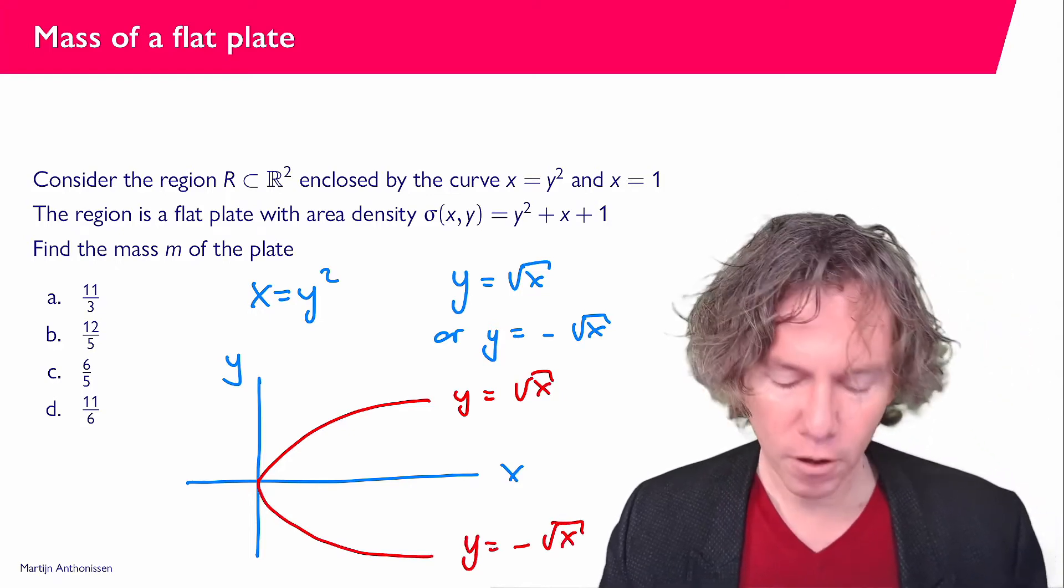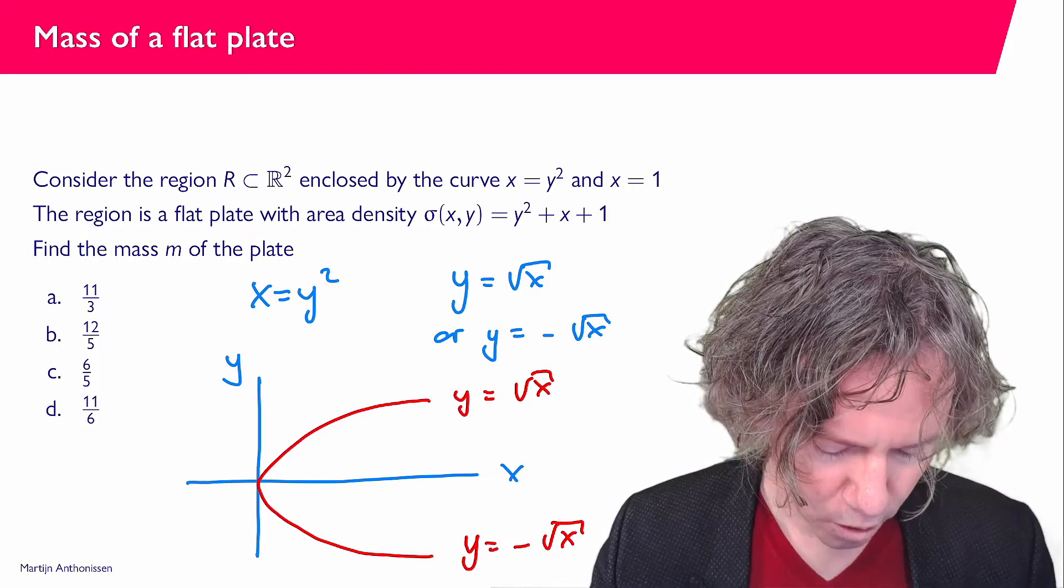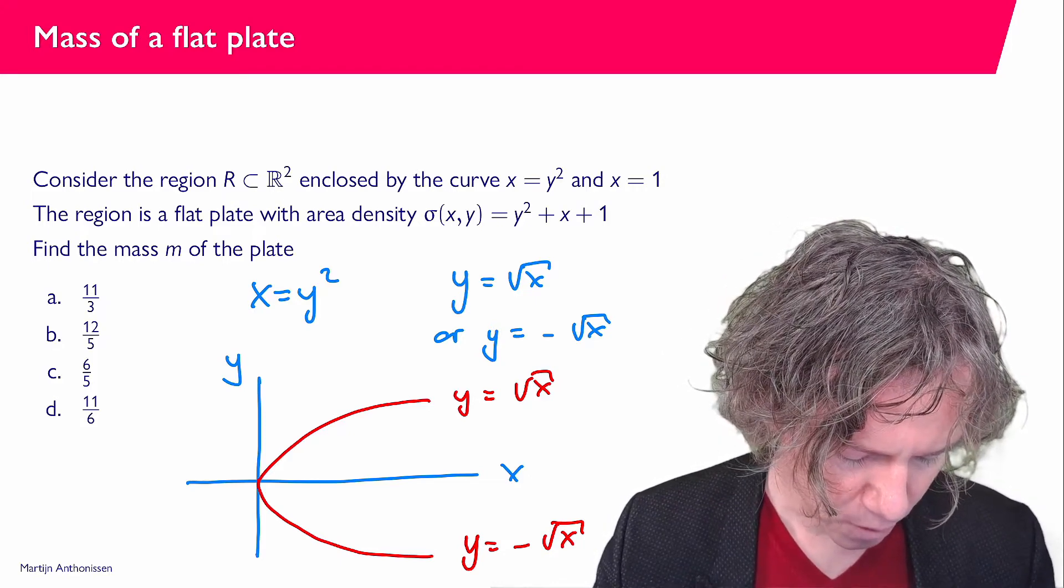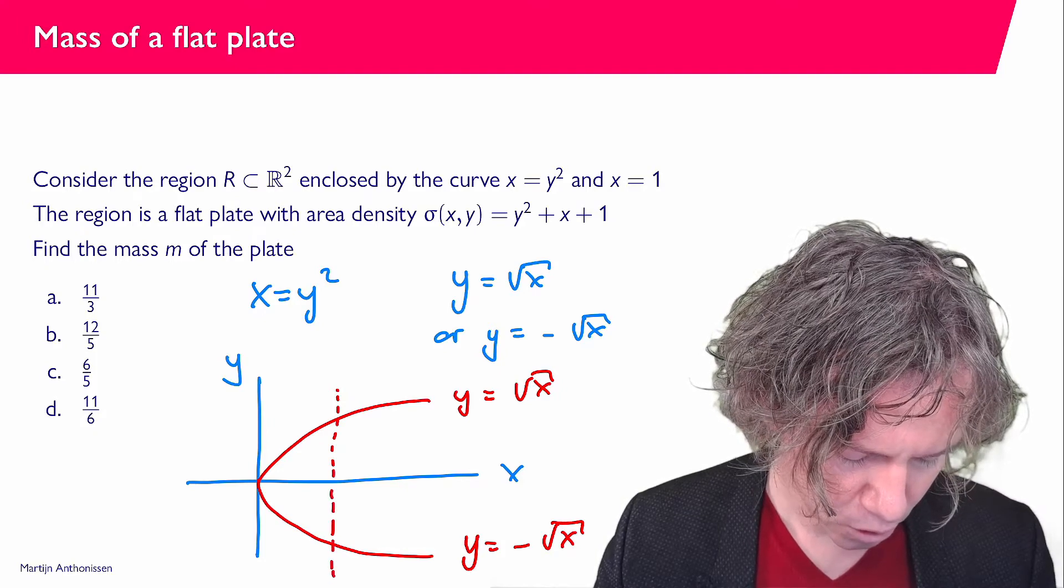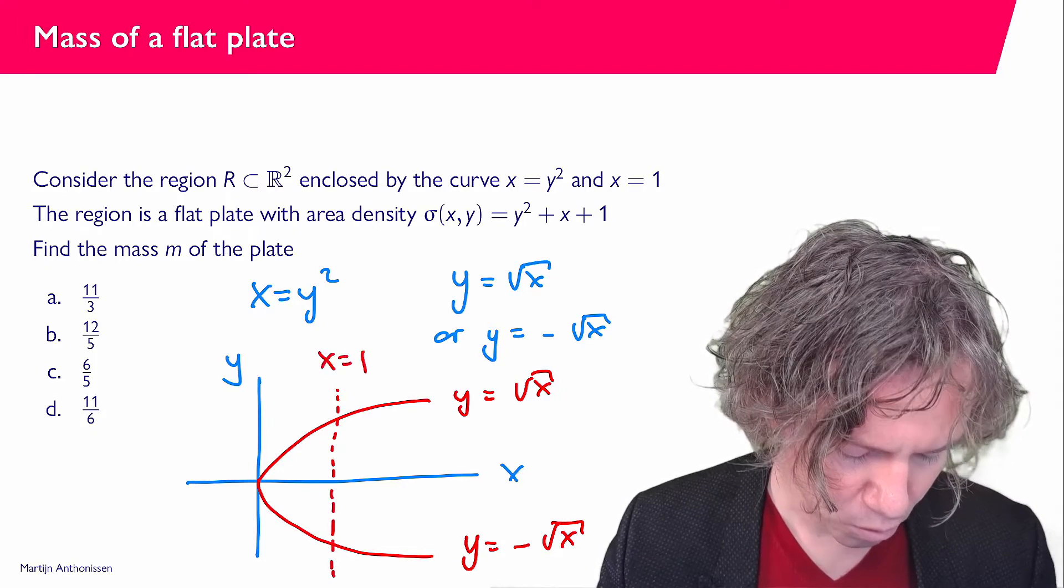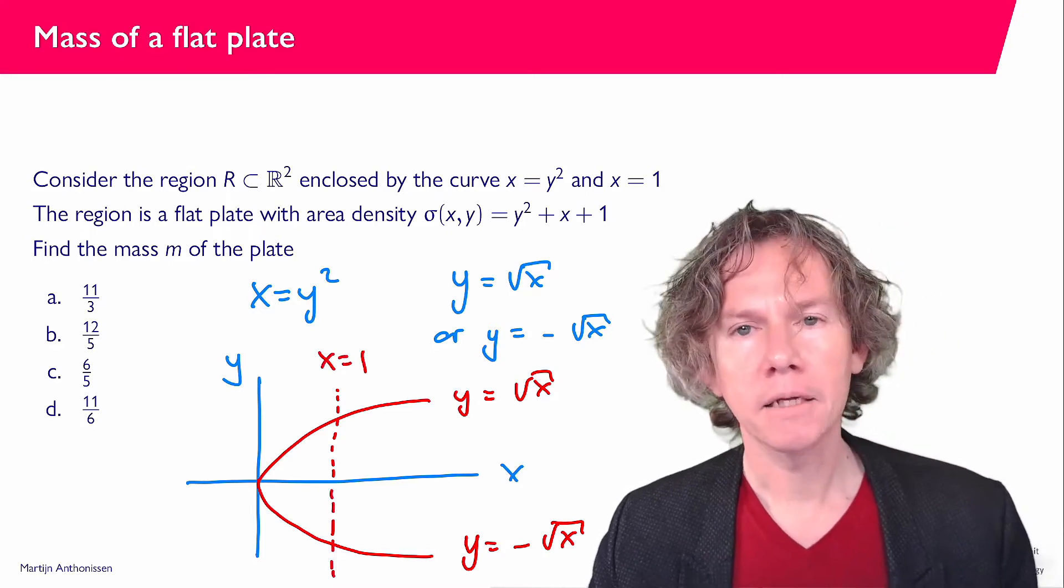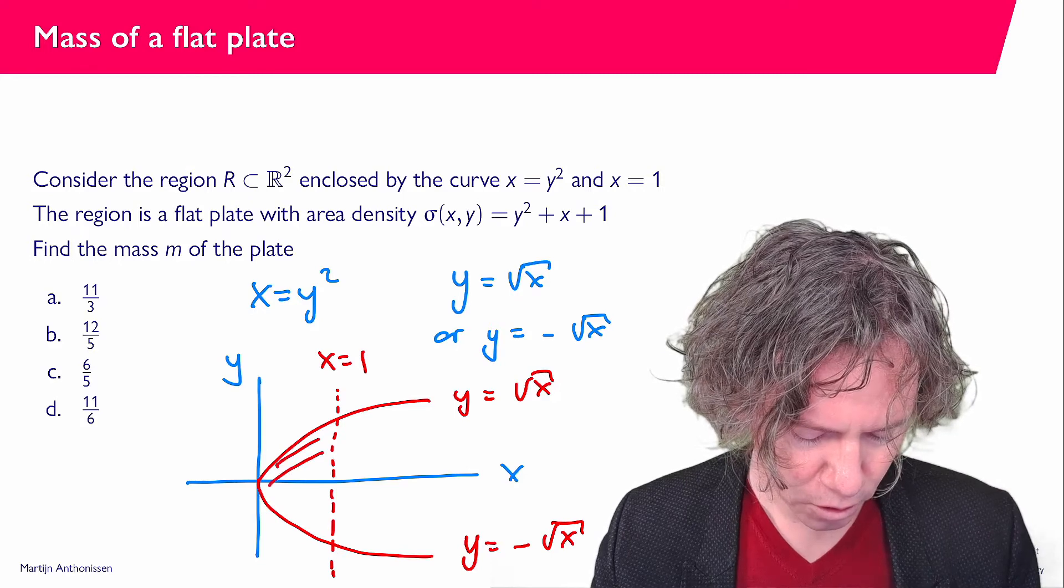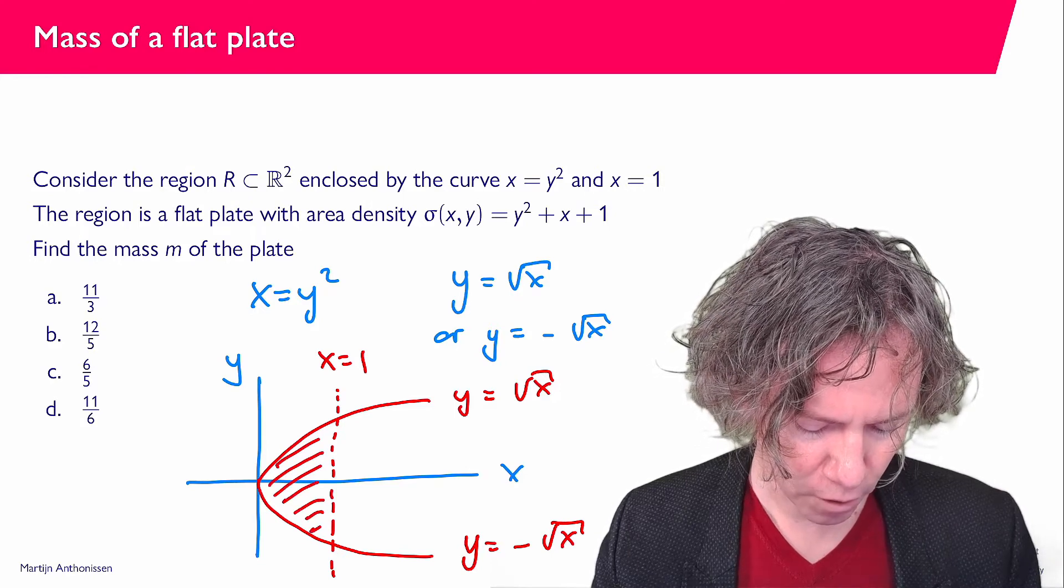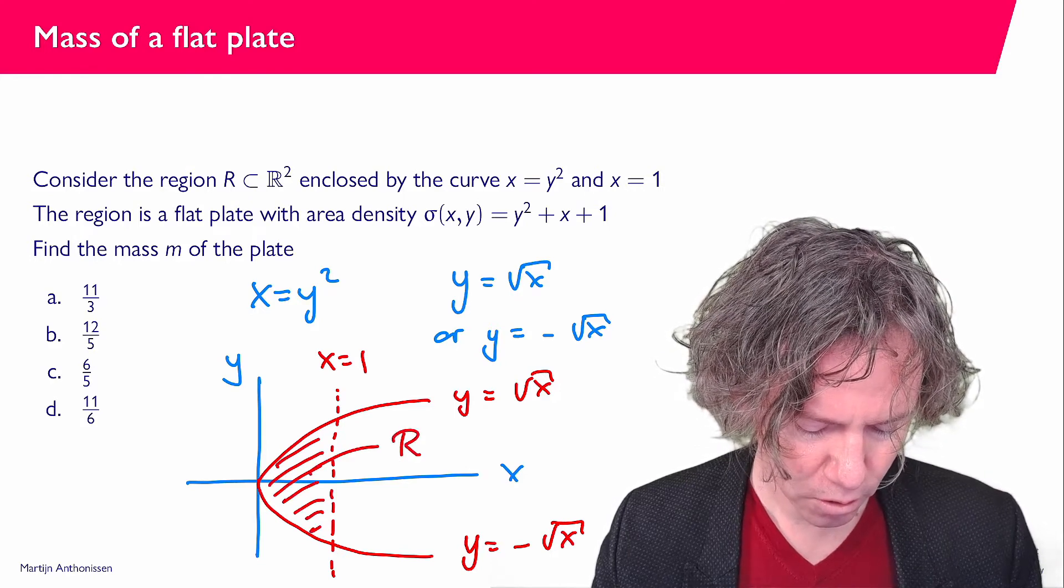And finally we also have the curve x equals 1. So that would be somewhere here. So this is x equals 1. And the region R is the region that is enclosed by both of these curves. So that's this area that we have here. So this here is R.